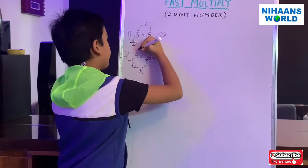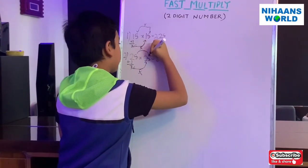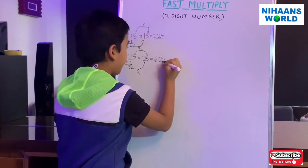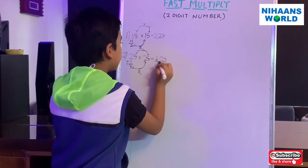And 5 multiplied by 5 is 25. So this is the answer.